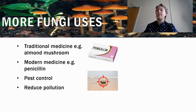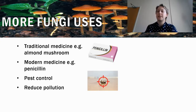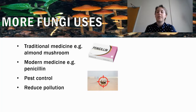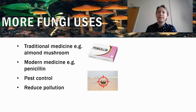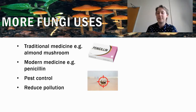Here are some more uses of fungi. First, we've got use as a traditional medicine, such as the almond mushroom, which is used as a cancer treatment in Chinese traditional medicine. It's important to be aware that sometimes there isn't evidence to support these treatments — research has actually shown that the almond mushroom, instead of preventing cancer, might actually give you cancer. So it's definitely something to consider when talking about these sorts of medicines.